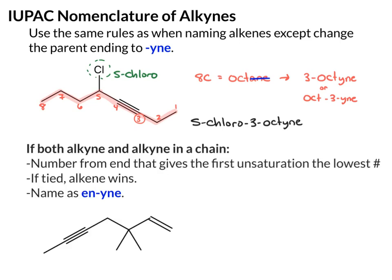So now let's consider what happens if we have both an alkene and an alkyne in the molecule — how do we name that? Here's an example structure where we have both. Your parent chain is going to be the longest carbon chain that contains both unsaturations, so make sure you highlight the pi bond and the double bond. From there, you want to number from both ends and figure out which one gives an unsaturation at the lowest number. If you start from the left, our first unsaturation is at carbon two. If you start from the right, it's at carbon one — that's better, so that's our preferred numbering.